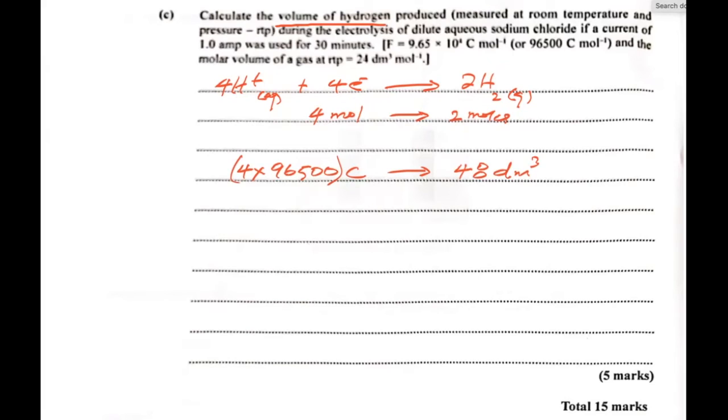So let's just resolve what that is on the left hand side. That's 96,500 times four is 386,000. So we can say 386,000 coulombs liberate 48 dm cube per mole. That's the amount of current that was required to produce two moles of the gas. So let's look at what was given to us.